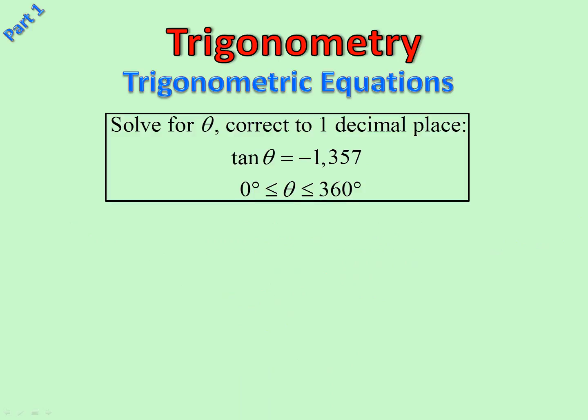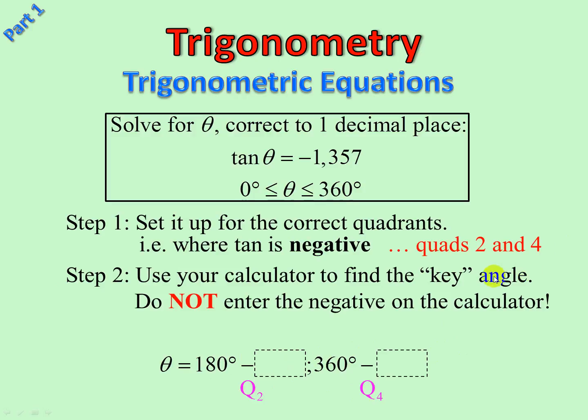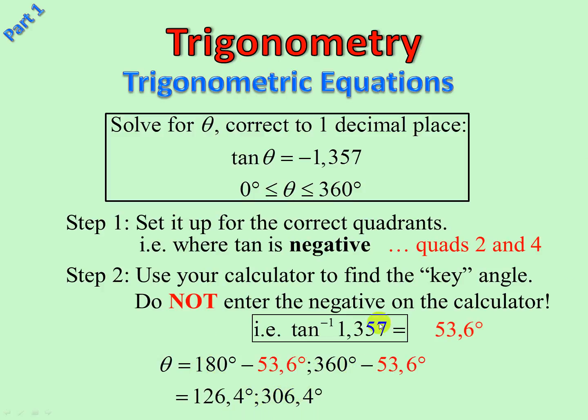Consider another one now. Step one: set it up. Tan is negative. So we say, where is tan negative? Second and fourth. So we're going to write 180° minus and 360° minus for quadrant 2, quadrant 4. Now we use the calculator to find the key angle. Please note: we've used the negative to tell us quadrant 2 and quadrant 4. We do not enter the negative on the calculator. We will go tan⁻¹(1.357). That's quite important because the calculator will also make quadrant adjustments but only give you one answer. So we do that to find the key angle, which is 53.6°. I slotted in 53.6°, 53.6°, and there are my two answers.